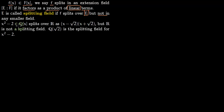For example, take x² - 2 over the rationals. This splits over the real numbers as (x - √2)(x + √2), but the real numbers are not economical — this is not a splitting field. You actually have a smaller field: ℚ(√2), which is the splitting field for x² - 2.